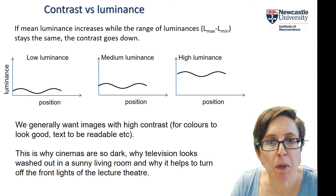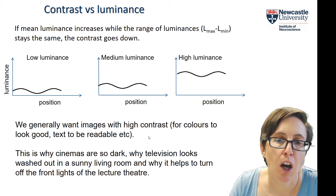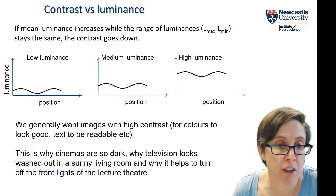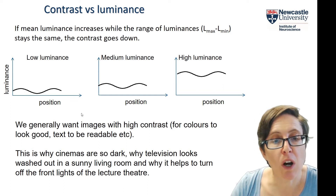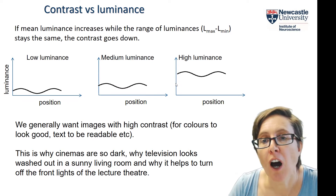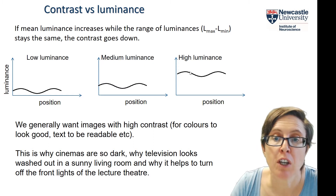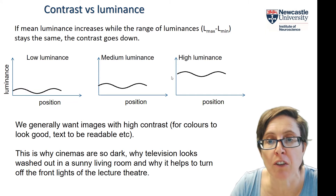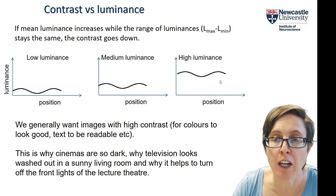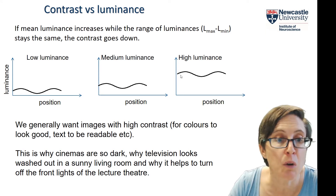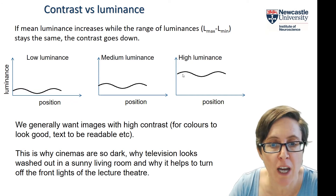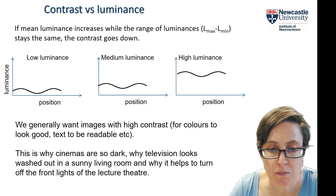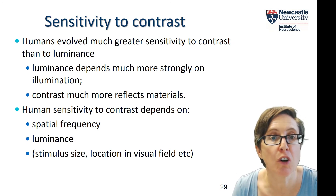Generally when looking at something — a television screen or a computer monitor — we want high contrast so that colours look good and text is readable. This is why cinemas are dark: we don't want high background luminance superimposed on the cinema image. The projector can control Lmax minus Lmin, but if that sits on top of high ambient illumination, the contrast looks low and the image looks washed out — like at an open-air cinema, or your TV in a sunny living room. This illustrates the greater importance of contrast relative to luminance.